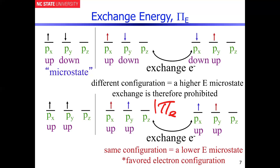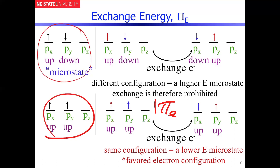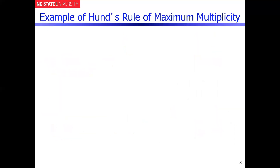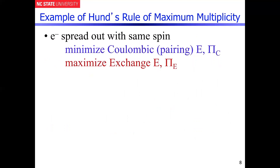This is a lower-energy microstate — this microstate is lower in energy with respect to the one with opposite spins. That is going to be very important when we consider what constitutes the most stabilized electron configurations. The electrons will spread out with the same spin, which minimizes the coulombic energy and maximizes the exchange energy, producing the most stabilized pairing energy possible.